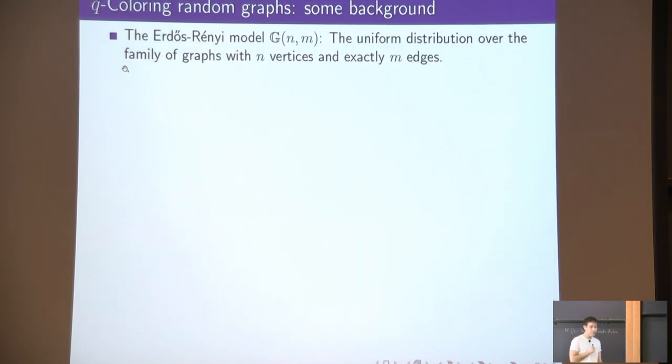For the rest of the talk, I will talk to you about a concrete open problem that I've been thinking about these days, which has to do with random constraint satisfaction problems. To set the scene and make things concrete, let me focus on the problem of q-coloring, but this time on random graphs. For this talk, a random graph is the GNM model, which is basically the uniform distribution over the family of graphs with n vertices and exactly m edges.